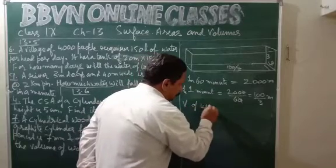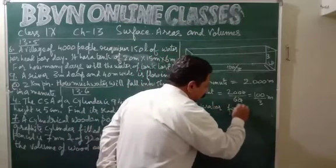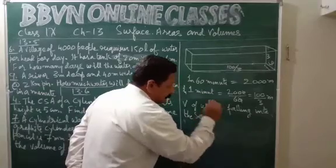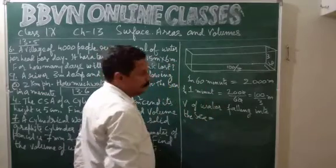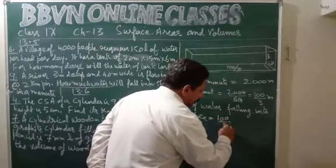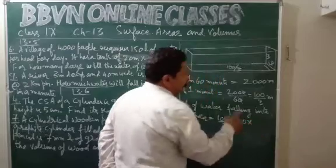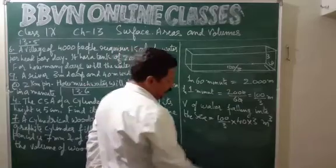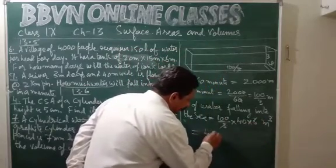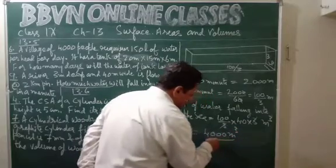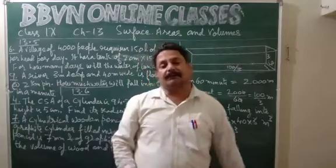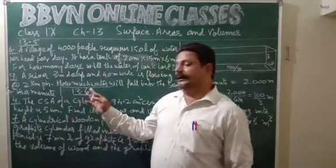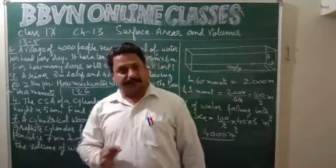Volume of water falling into the sea — it is the shape of a cuboid, L into B into H. That is 100 upon 3 into width 40 meters into height, that is depth of the river, 3 meters. Meter cube will be the unit of volume. 3 cancels with 3, giving 4000 meter cube. This is the volume of water that will fall into the sea per minute from this particular river when the water is flowing at the rate of 2 kilometers per hour.